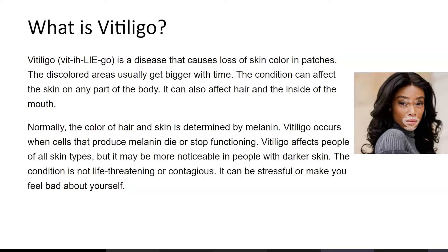You can see examples like the picture showing patches with no color near her mouth. Vitiligo is a disease that causes loss of skin color in patches. This condition can affect the skin on any part of the body, and it can also affect hair and the inside of the mouth. Normally, color of hair and skin is determined by melanin. Vitiligo occurs when cells that produce melanin — called melanocytes — die or stop functioning, leaving patches of skin with no color.